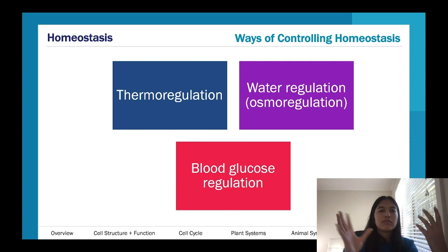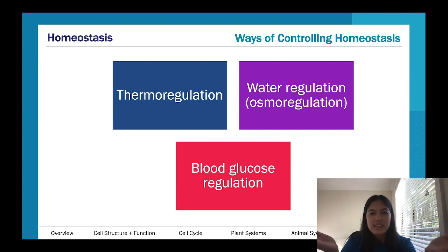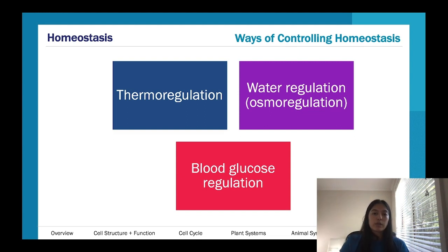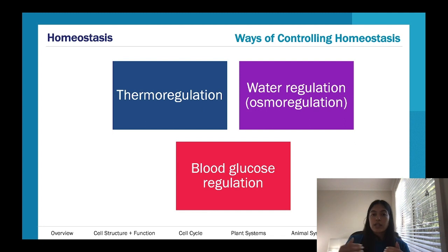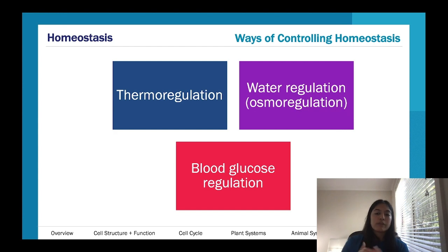Osmoregulation is about not being too dehydrated or over-hydrated. The hormone involved is ADH — anti-diuretic hormone. Diuretics make you urinate, so anti-diuretic means the opposite. If you're dehydrated, ADH is released, you absorb as much water as possible from the nephron, and you excrete less water. If water levels are fine, ADH levels are lower, and the body can excrete water normally.